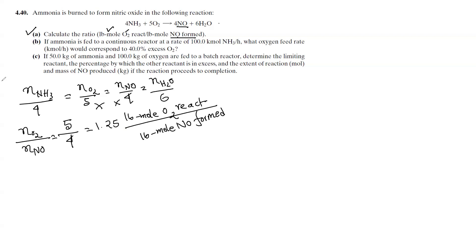Now for part B: if ammonia is fed to a continuous reactor at a rate of 100 kilomole NH3 per hour, what oxygen feed rate would correspond to 40 percent excess oxygen? We need to first find the theoretical oxygen requirement. We haven't counted the theoretical amount yet — we need to calculate the theoretical value first.